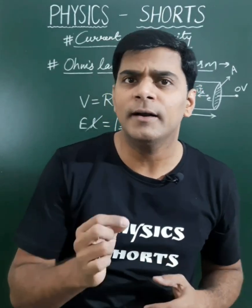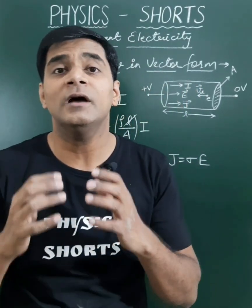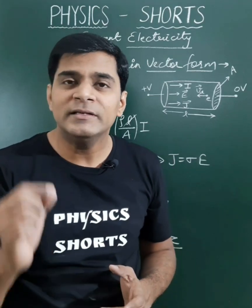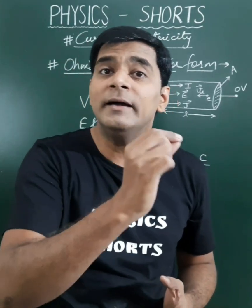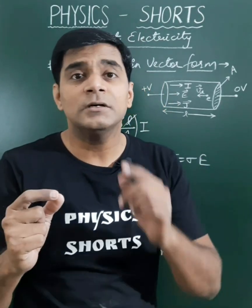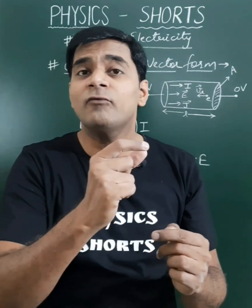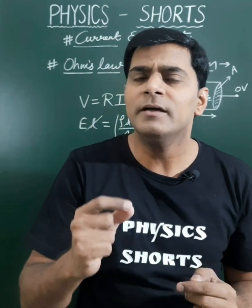The Ohm's law V equals RI can also be expressed in vector form, and that form is J vector equals σE vector. J vector is the current density and E is the electric field. Sigma is the conductivity.